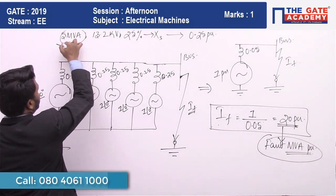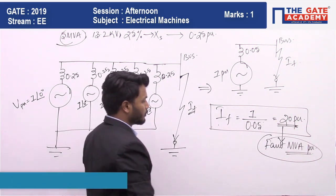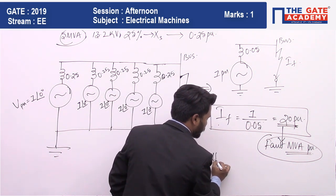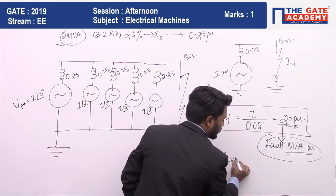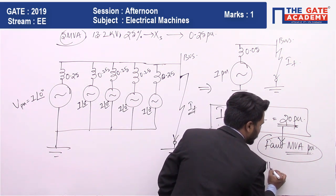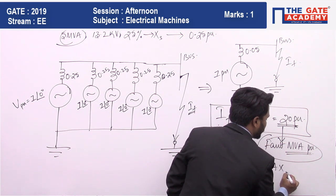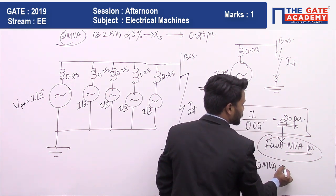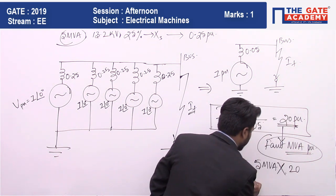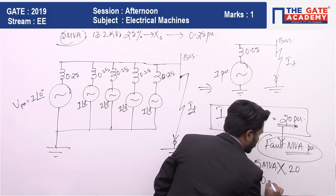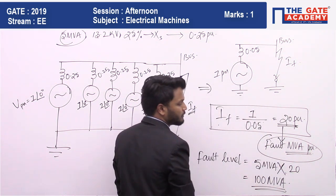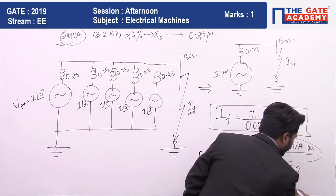The fault MVA per unit multiplied by the base value gives the total fault level. The base value is 5 MVA. Therefore, total fault level equals 5 MVA multiplied by 20, which gives 100 MVA. The correct answer for this question is 100 MVA.